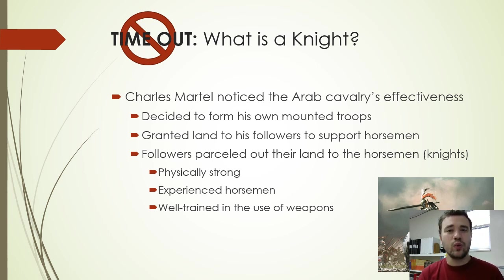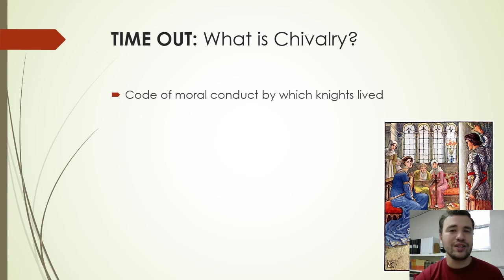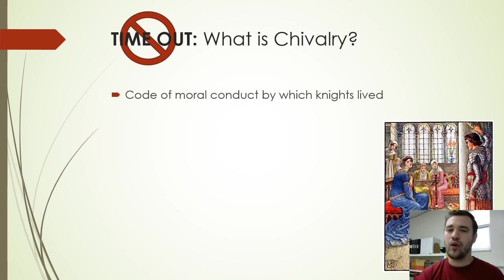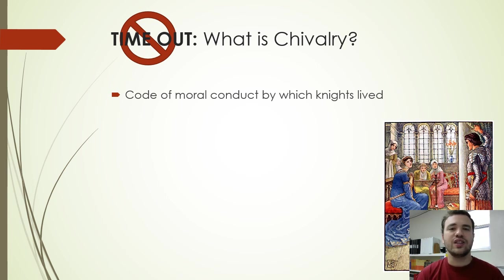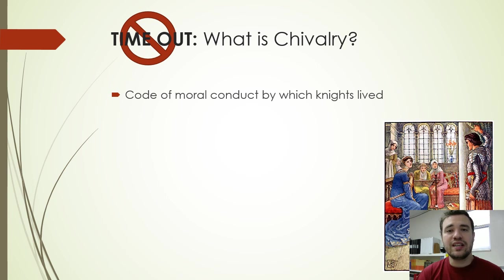Knights didn't necessarily do most of the work — the serfs and peasants did — but it was the knights who protected them, as well as the nobles and kings. Chivalry was essentially a code of moral conduct by which knights were supposed to live. Scholars have debated how well knights actually abided by the code, but it was still a good thing to have as a standard to strive toward. The first element was that everything you did, your primary allegiance was to God, and you offered your services to God first and foremost.